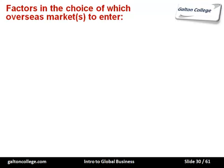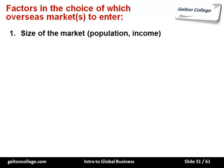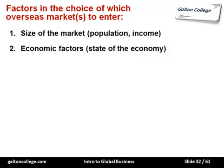Factors in the choice of which overseas market to enter include the size of the market and income levels — some societies may be large but have low average disposable incomes. Economic factors are also very important: the state of the economy, government policy (whether right-wing, left-wing, libertarian, or interventionist), political stability, the rate of economic growth, and the degree of bureaucracy all need to be considered.